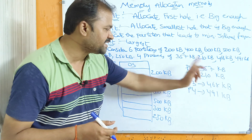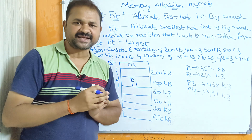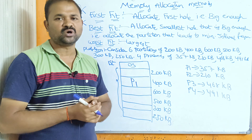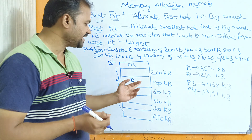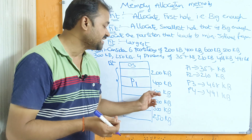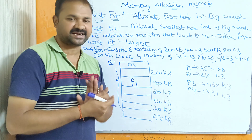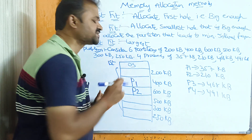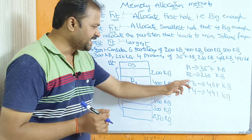For P2 (size 210 KB), we again start from the first partition. The first partition is 200 KB — we can't store 210 in 200. The next partition (400 KB) is already occupied. So the next available partition is 600 KB. We can store 210 in 600, so we store P2 in the third partition of size 600 KB.